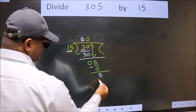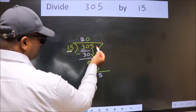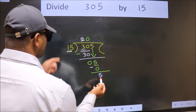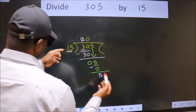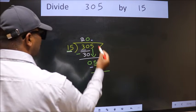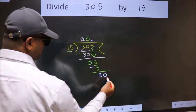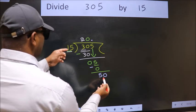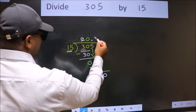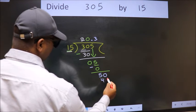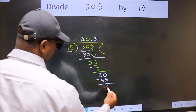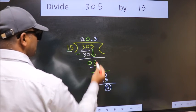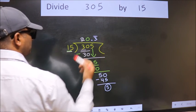Now we subtract. We get 5. Over here, we did not bring any number down, and 5 is smaller than 15. So now we can put dot, take 0. So 50. A number close to 50 in 15 table is 15 threes, 45. Now we subtract. We got 5 again. That means we get bar on this number.